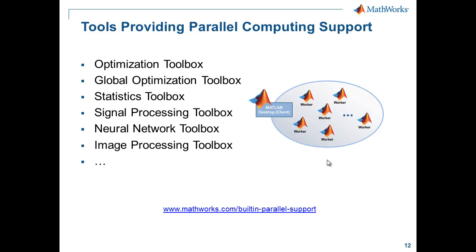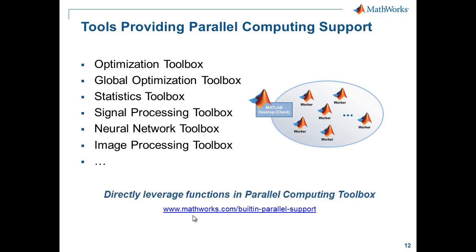That was just one function from the Optimization Toolbox. In fact, the Optimization Toolbox has several other functions that behave the same way — you just pass in a flag, use parallel, and everything is handled by the function. We also have other toolboxes with built-in parallel support, such as Global Optimization, Statistics, and Signal Processing. Every release we're adding functionality to various toolboxes. I encourage you to check the link that shows the current list of supported toolboxes with built-in parallel support. All of these are using the programming constructs available from the Parallel Computing Toolbox.